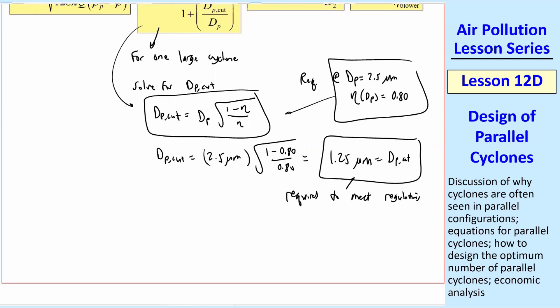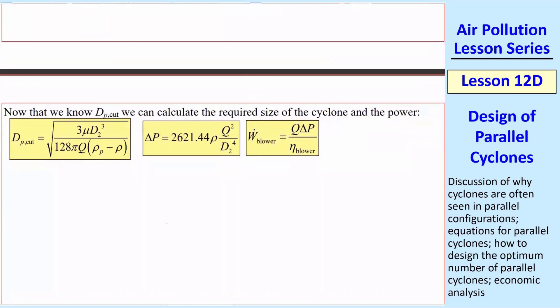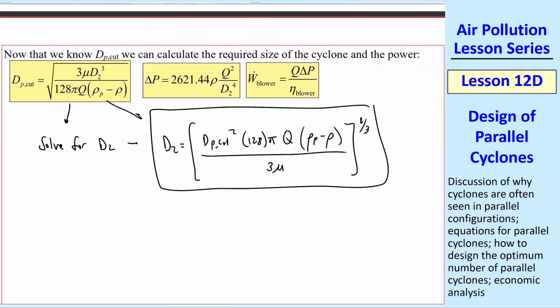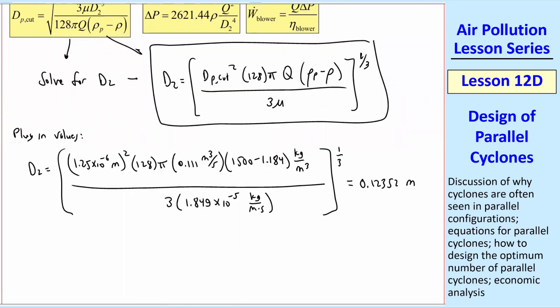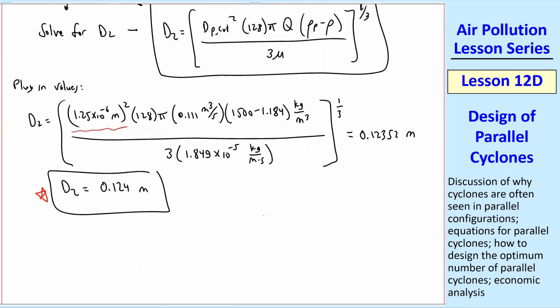Now, let's use this equation to calculate the D2 that's needed. Now that we know dpcut, we can calculate the required size of the cyclone and the power. Let's take this equation and do some algebra to solve for D2. We get D2 is equal to dpcut squared times 128 times pi times Q times (rho particle minus rho air) over 3 mu, and then the whole thing raised to the 1/3 power. That's that same equation solved for D2. Now let's plug in some numbers. Make sure you watch your units, as everybody should know by now. I changed my dpcut to meters, and then all the units cancel out properly. We don't even need any unit conversions with this. And so my answer would be, to three digits, 0.124 meters. So that is the required D2. You can build the cyclone out of that. With that dimension, you could build everything else. So that's our answer for the size.